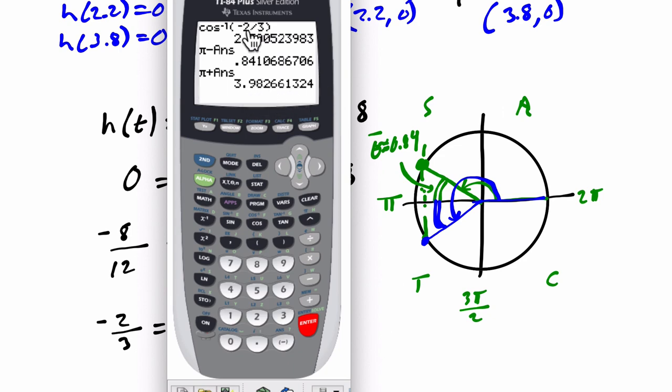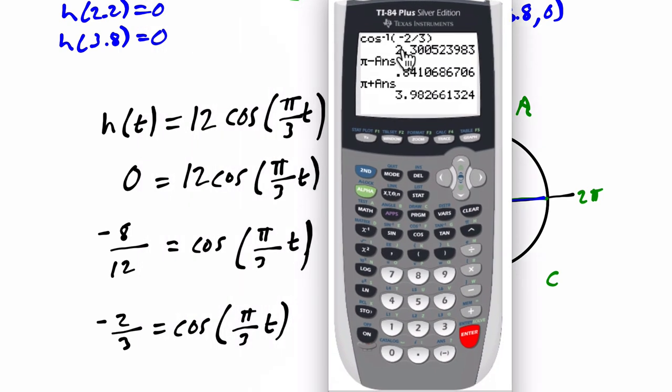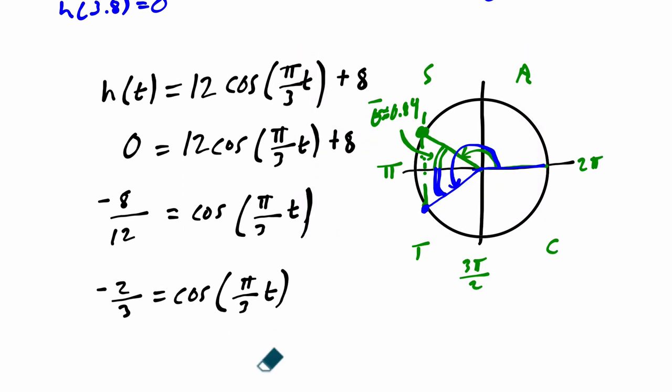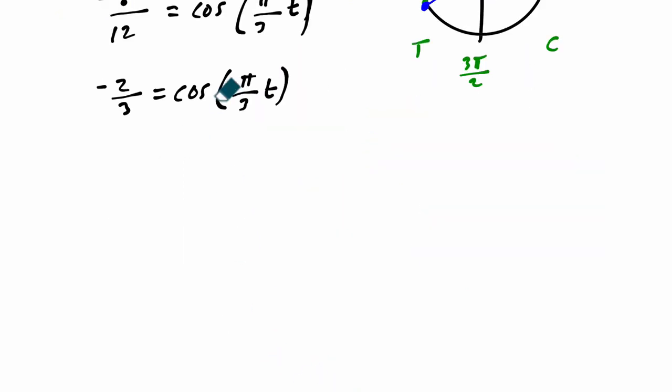Now, when I look at this, I'm like wait a minute, something's wrong. I don't have the same numbers as before. I don't have 2.2 and I don't have 3.8. I have 2.3 and 3.98. So what's going on? What's happening here is that in this problem, we're not just solving for an angle. If this was just theta in here or just t, we would be done. But there's more to this problem. We know that this angle, pi over 3 times t, has to be equal to the two angles that we just found.